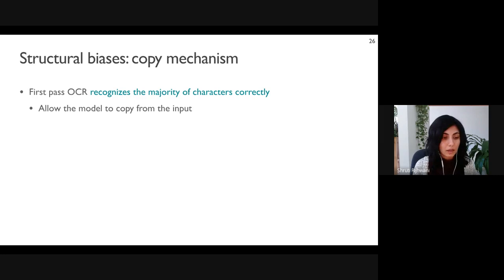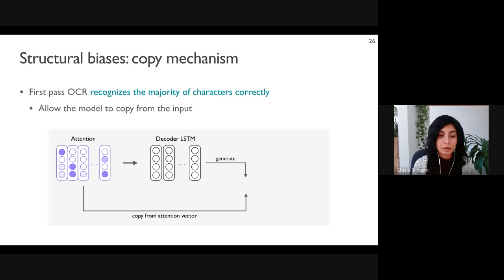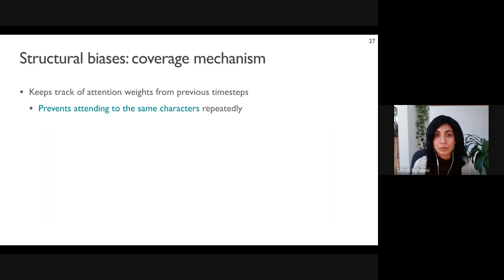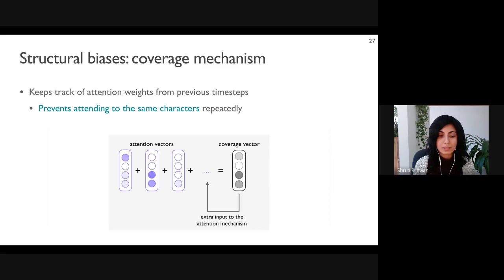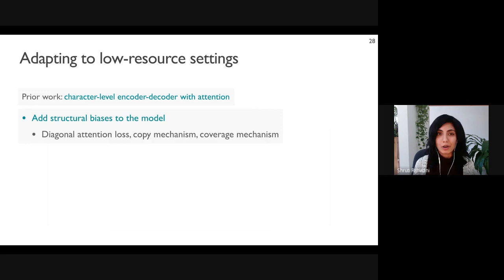We also know that the first-pass OCR recognizes a majority of characters correctly, so we add a copy mechanism to allow the model to copy a character from the input text. The decoder LSTM generates a probability distribution for the next character while the copy mechanism samples the character from the attention vector. A generation probability determined by learnable parameters at each time step interpolates between the decoder and the copy mechanism. We also add a coverage mechanism to track attention weights from previous time steps and prevent the model from attending to the same characters repeatedly.